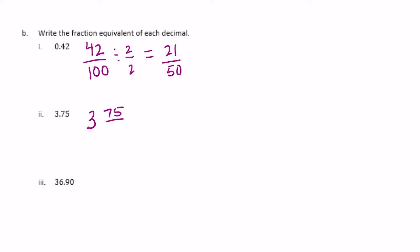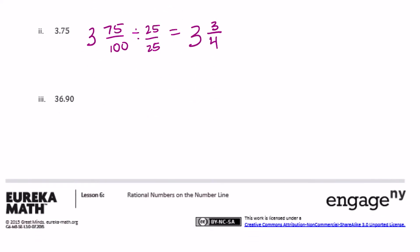For 3 and 75 hundredths, we can divide both 75 and 100 by 25: 75 divided by 25 is 3, and 100 divided by 25 is 4, so that gives us 3 and 3/4. Then for 36 and 90 hundredths, we cancel out two zeros to get 36 and 9 tenths.